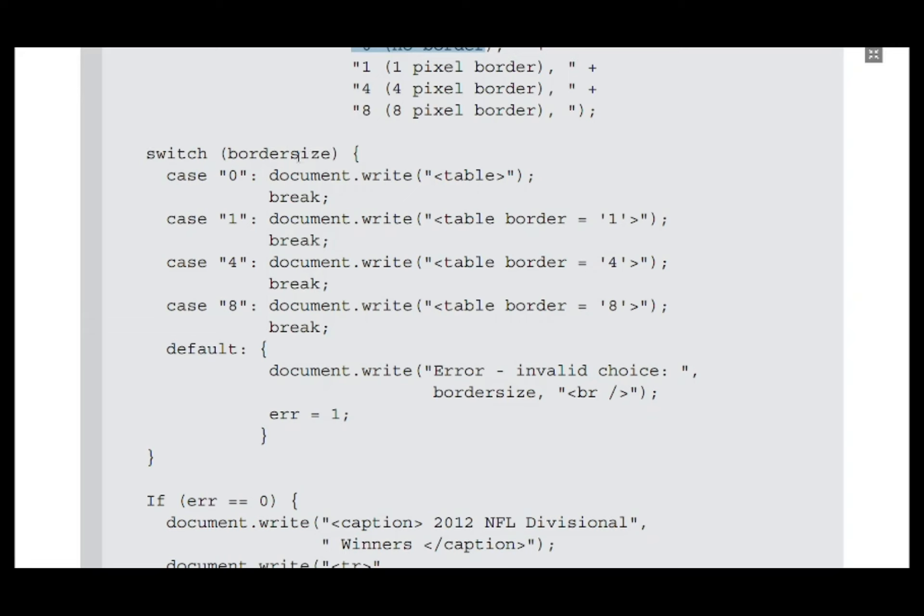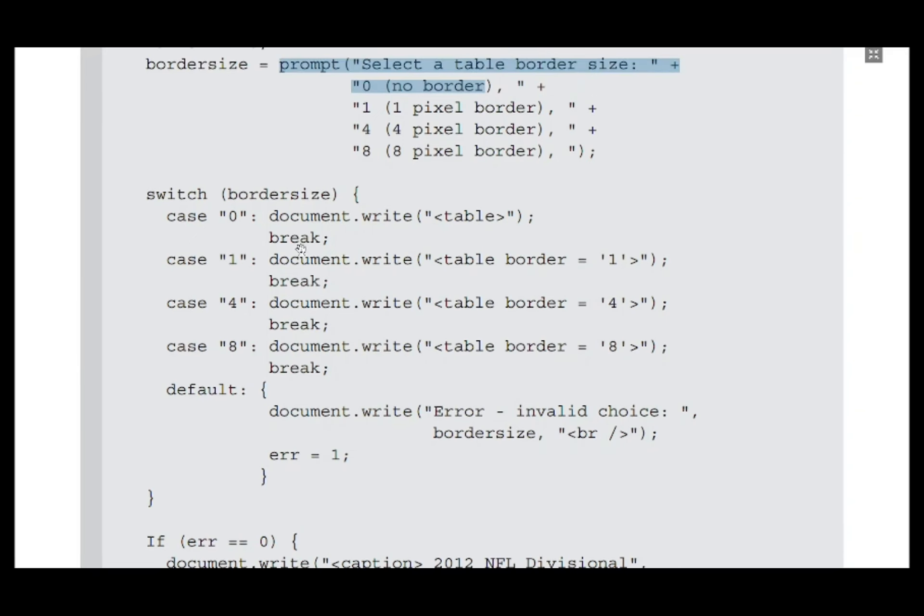Now we are starting a switch statement, and the expression given is the border size variable. Whatever border size holds will be compared against the case values. If the user has entered zero, in the currently processed HTML document we will write a table tag without any border attribute. It will be a table without any border, and we will break.